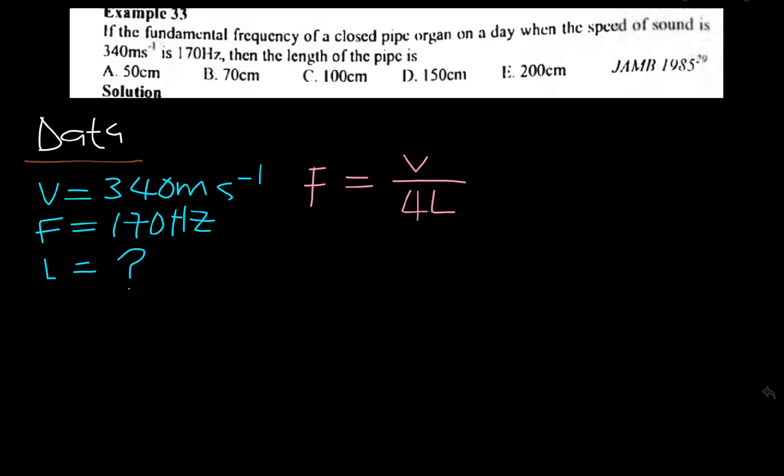But we are supposed to solve for length, so we need to make length the subject. In making length the subject, we'll first cross multiply and we'll have V equals 4FL. Please, never write FL4. Numbers should always come before the alphabet. Next, we divide all through by 4F so that L can stand alone. This cancels and we'll have L equals V over 4F.